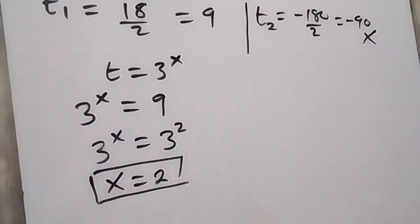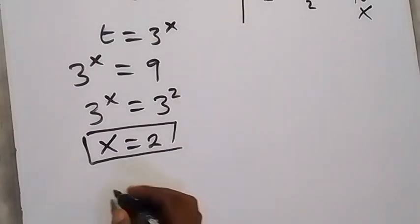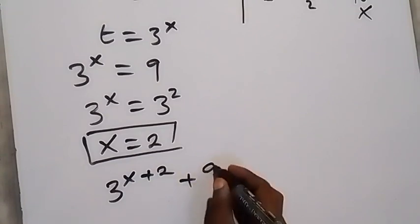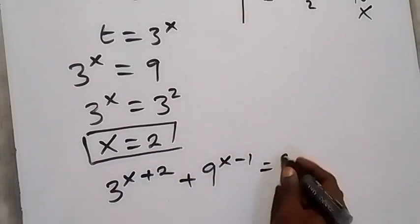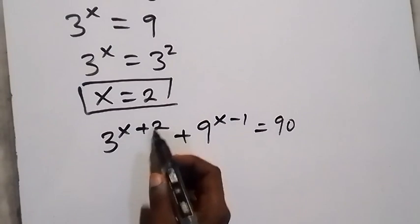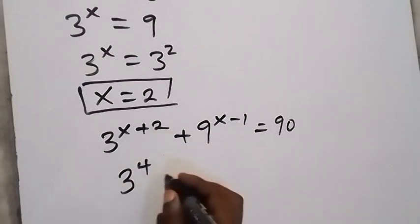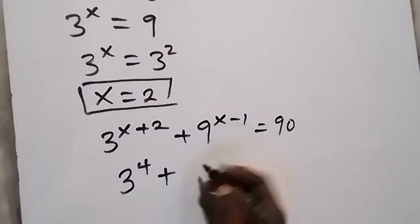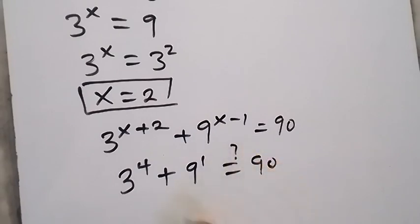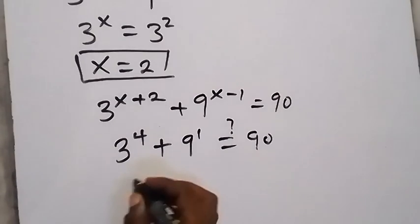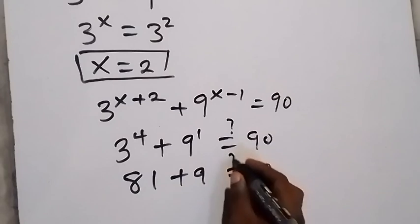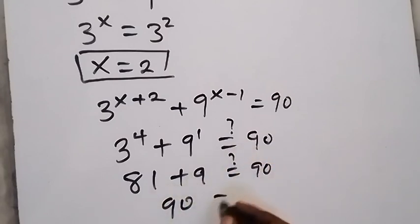To verify: substituting x equals 2 into the original equation — 3 raised to power x plus 2 plus 9 raised to power x minus 1 equals 90. With x equal to 2: 3 raised to power 4 plus 9 raised to power 1, which is 81 plus 9, equals 90. The left hand side equals the right hand side.